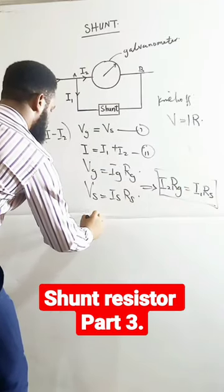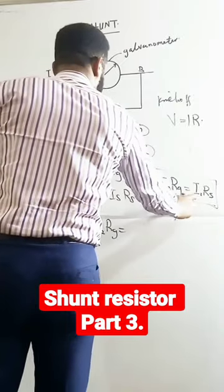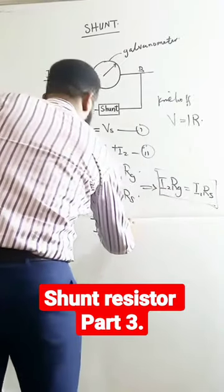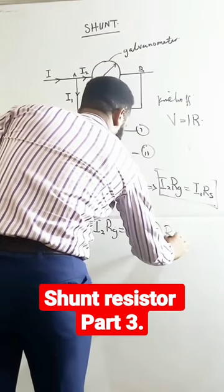I'm going to say I times the resistance of the galvanometer. The current of the shunt is going to be I minus I2 multiplied by the resistance of the shunt.